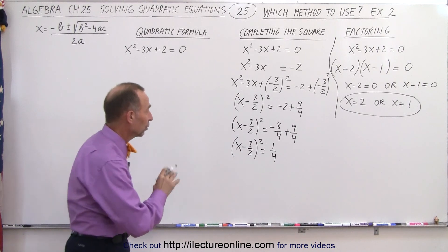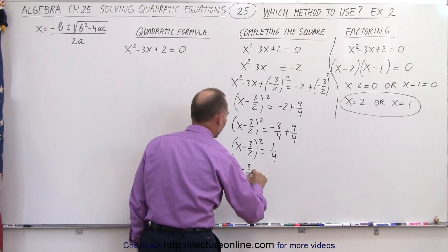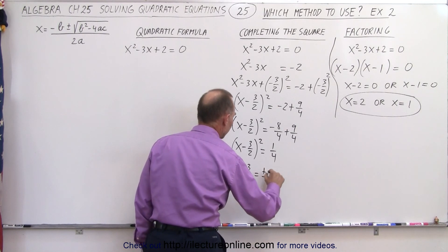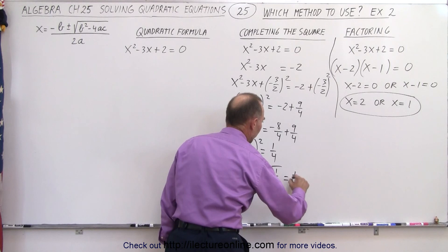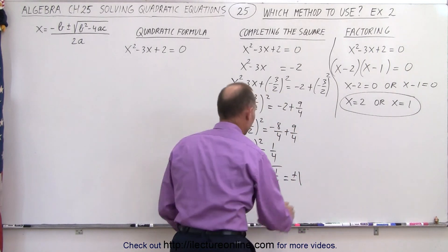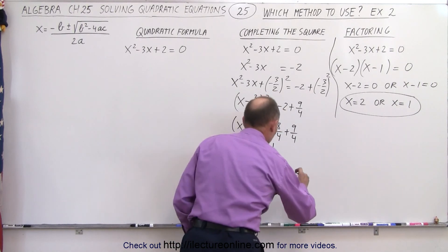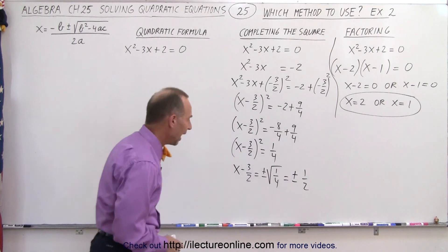All right, now we're ready to take the square root of both sides. So this means that we're going to get X minus 3 over 2 is equal to plus and minus the square root of 1 over 4, which of course is equal to plus or minus 1 half because the square root of 1 over 4 is 1 half.